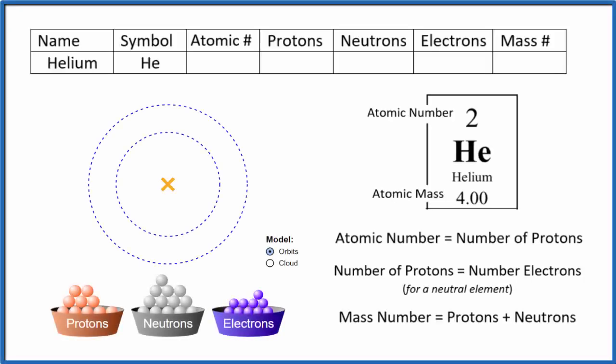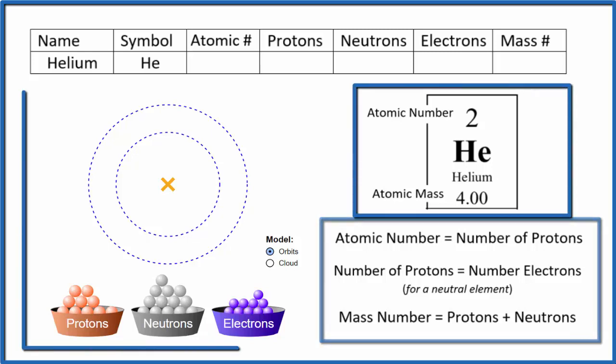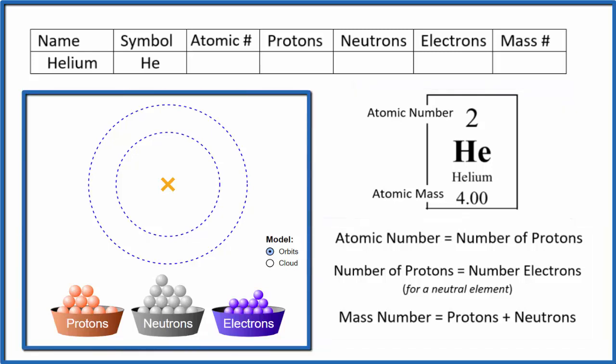In this video we'll look at the protons, neutrons, electrons and mass number for helium. We use these rules, the periodic table, and this app to make it really visual and show how we find these values.